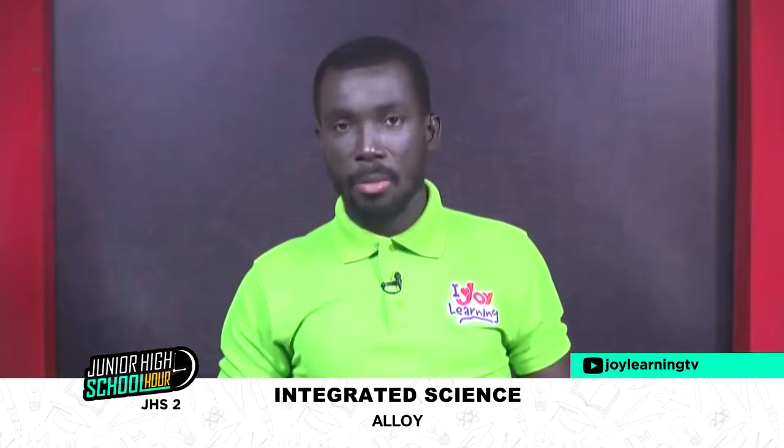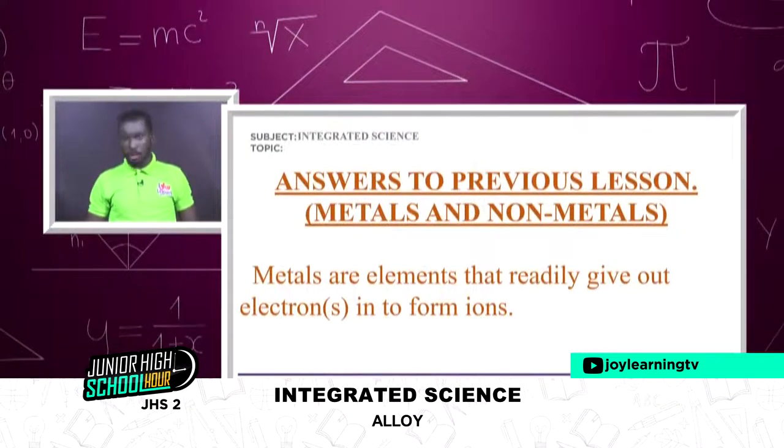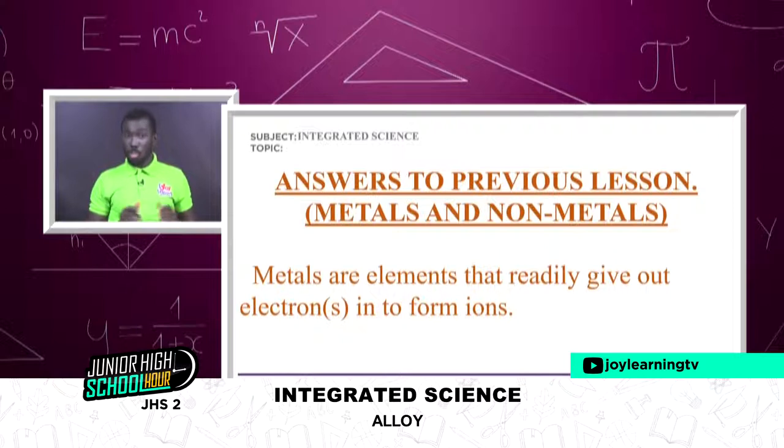The first question I gave you was: what are metals? When somebody asks you what a metal is, how will you explain it? We said metals are elements that readily give out electrons to form ions. When we say something is a metal, it means it has the ability to give out electrons from its valence shell to form ions — one or two electrons.